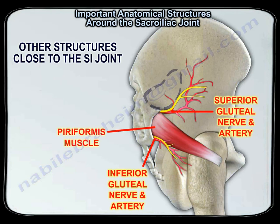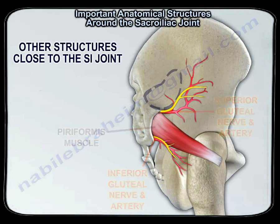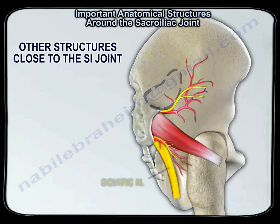Above the periformis you can see the superior gluteal nerve and artery, and below the periformis you can see the inferior gluteal nerve and artery. You can also see the sciatic nerve.